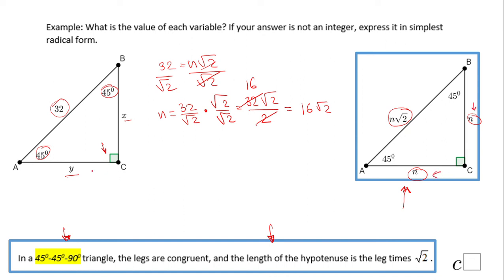So x will be that n, which is 16 square root of 2, and y is also the n because they are equal: 16 square root of 2. And that's it.